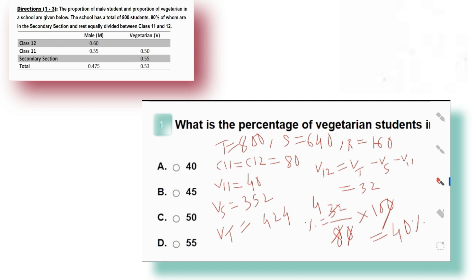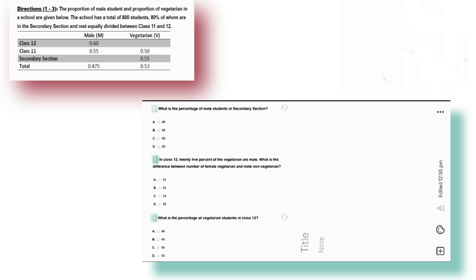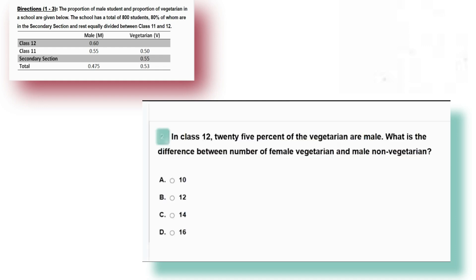I'm giving you a quiz — please try this problem. In class 12, 25% of the vegetarians are male. What is the difference between the number of female vegetarians and male non-vegetarians? The options are 10, 12, 14, and 16. If you are watching attentively, prove it and give the answer in the comment section. For more such problems and actual exam questions, check our prime materials and join our Telegram channel t.me/ubicana and follow our Instagram at instagram.com/technology.